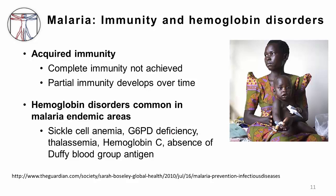Complete immunity is really not ever achieved, but you can get this partial immunity. People who tend to have the most severe disease — as I mentioned, African children have the most deaths — because they tend to be newly exposed and don't have any immunity, and they tend to be at high risk for very severe disease. Also, travelers — people who are from non-endemic regions and then go on to develop malaria — can have very severe malaria because they have no immunity at all.